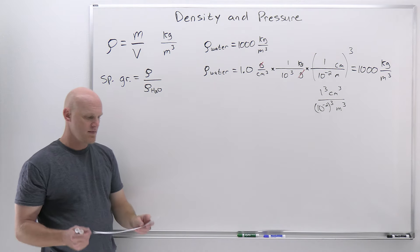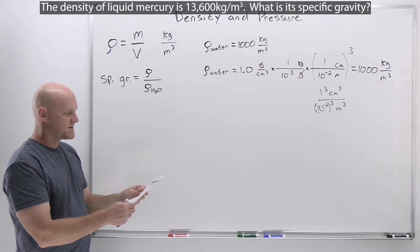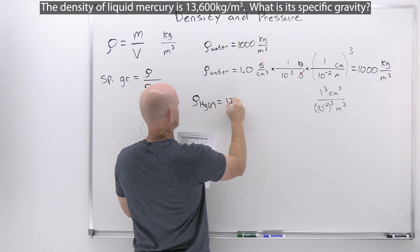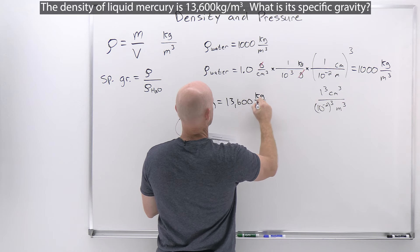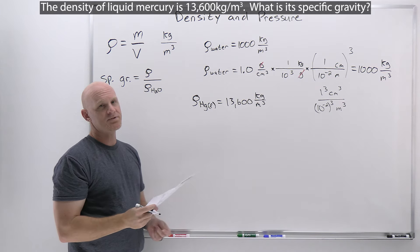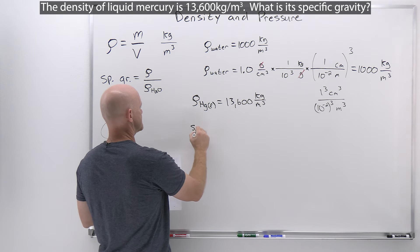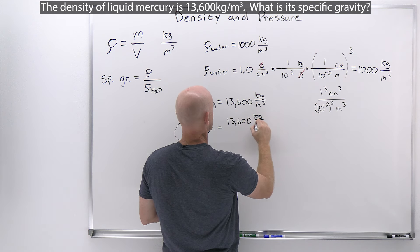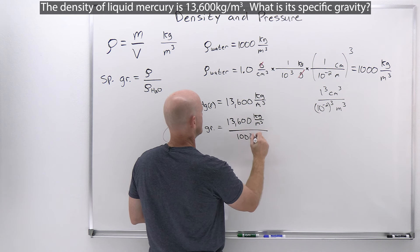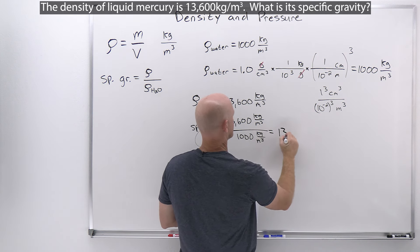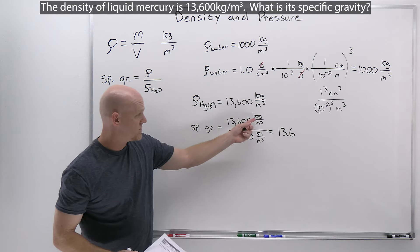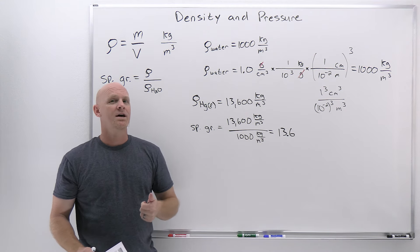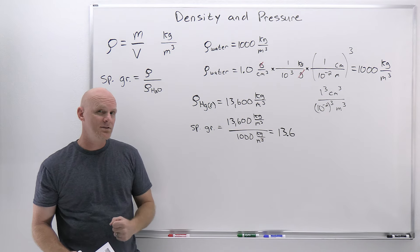The first problem: the density of liquid mercury is 13,600 kilograms per meter cubed. What is its specific gravity? We plug into the formula: specific gravity equals the density of mercury (13,600 kg/m³) divided by the density of water (1000 kg/m³), which gives a specific gravity of 13.6. Notice there are no units — specific gravity is unitless. A value of 13.6 means liquid mercury is 13.6 times more dense than water.